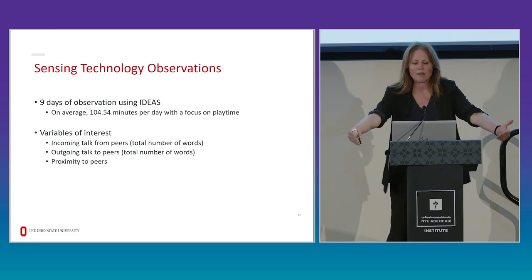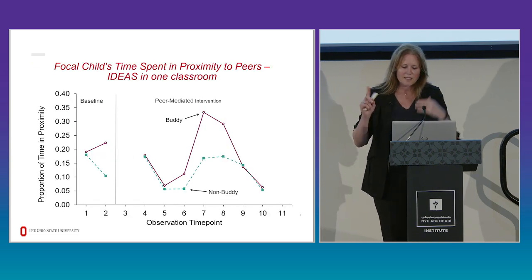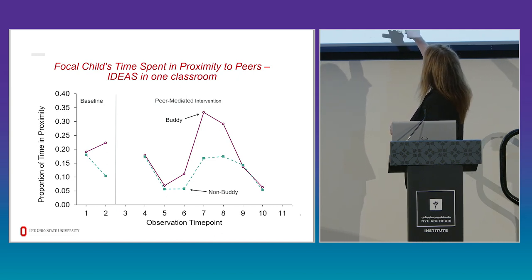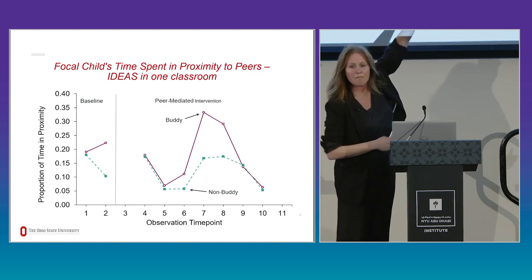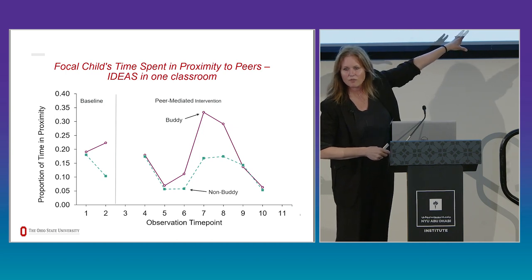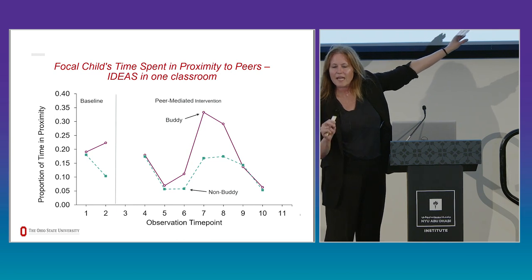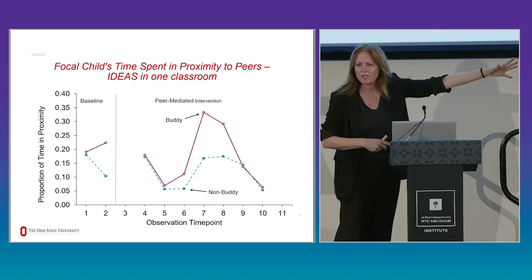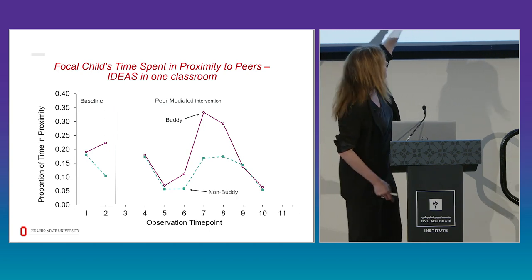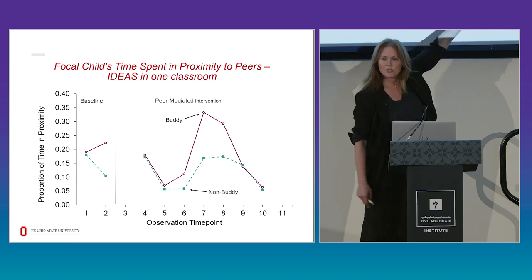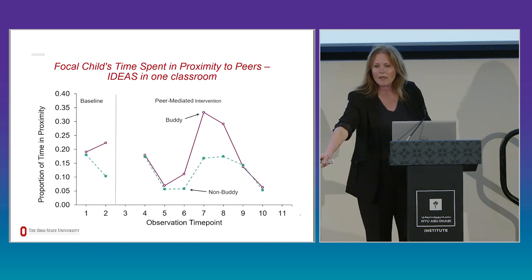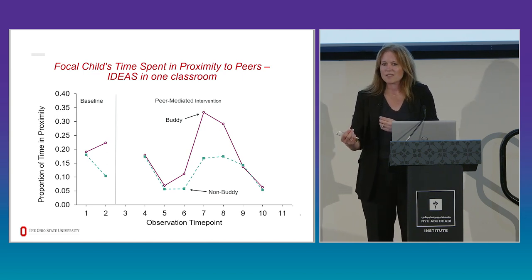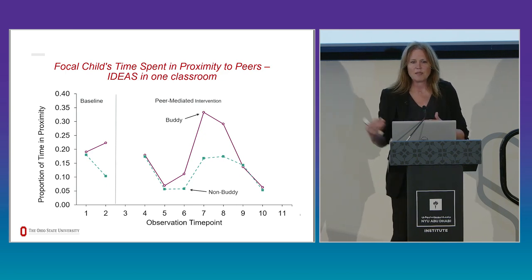We've been using the sensing system to look at intervention effects. Over about ten weeks, we did all-day recordings in classrooms — on average about 104 minutes focused on play time, where we want to see these mechanisms at work. Our variables are incoming talk and outgoing talk. Using sensing data, we looked at a baseline of two weeks monitoring the focal child's time in proximity to buddies and other kids. You see not much happening in terms of proximity early on, but then a boost starting around week six, seven, eight — with a dip at week nine when the intervention was closing, suggesting we can't close the intervention too early.